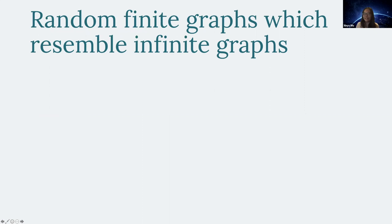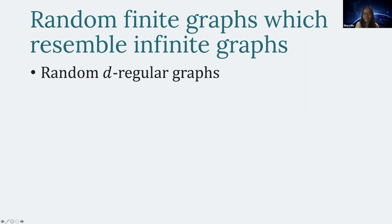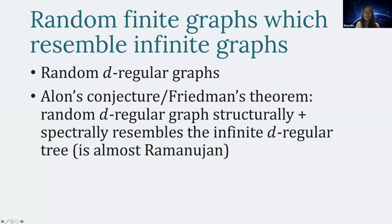There are many constructions of Ramanujan graphs, but I'll take a slightly different angle: random constructions. It turns out that a random d-regular graph also has the property of approximating the infinite d-regular tree. By a random d-regular graph I mean you sum up random matchings. This graph has the property of approximating the infinite d-regular tree, by a conjecture of Alon proved by Friedman, which says that a random d-regular graph is going to be almost Ramanujan.